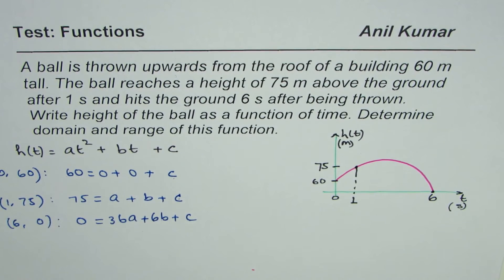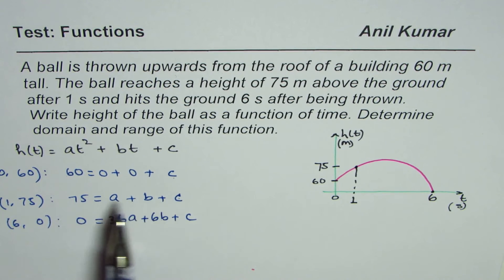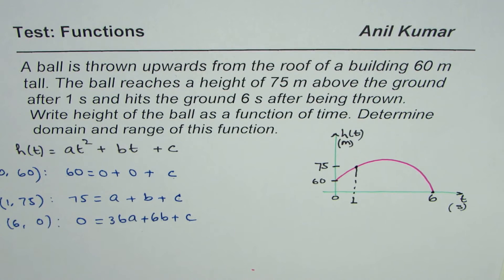You can simplify and solve them. You can use either substitution or elimination. You can say a is 70 minus 60 which is 15, 15 minus b substitute and find. So that is how you could actually solve.